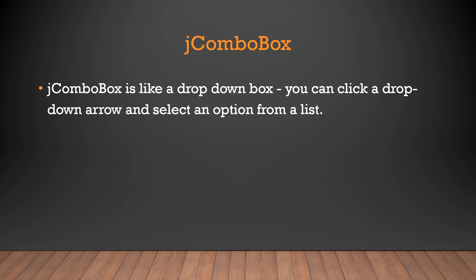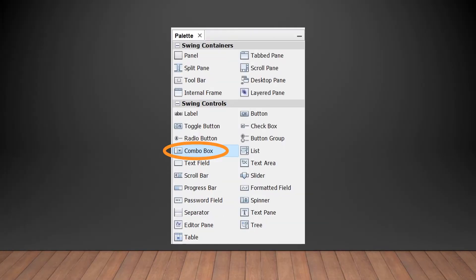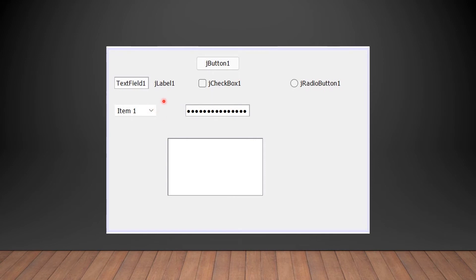JComboBox is like a drop-down box — you can click a drop-down arrow and select an option from a list. To use it, go to the palette and select ComboBox, then drag it to the frame. As you can see, it shows 'Item 1' with an arrow; when you click the arrow, the list is displayed and you can select any option.